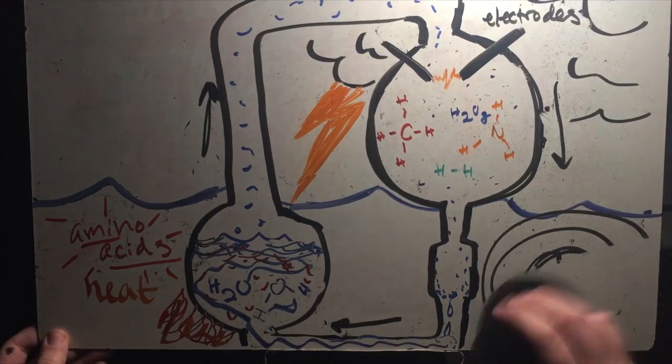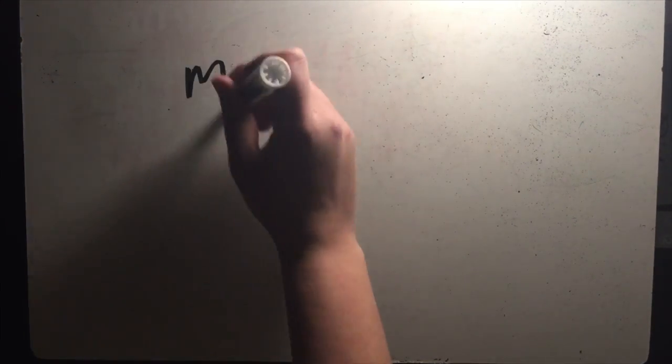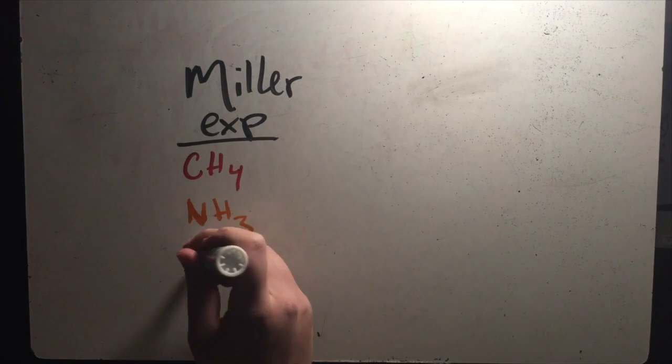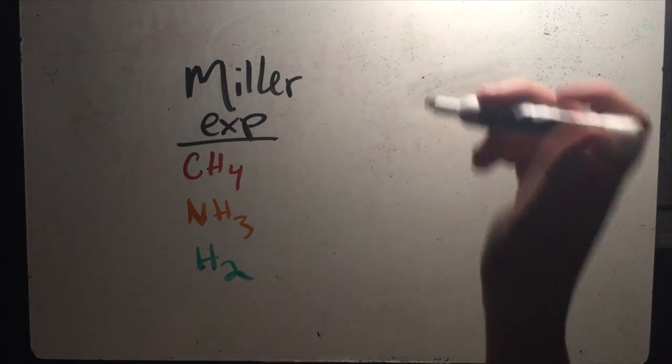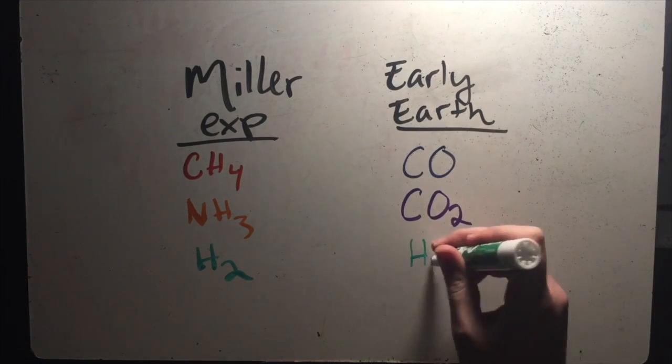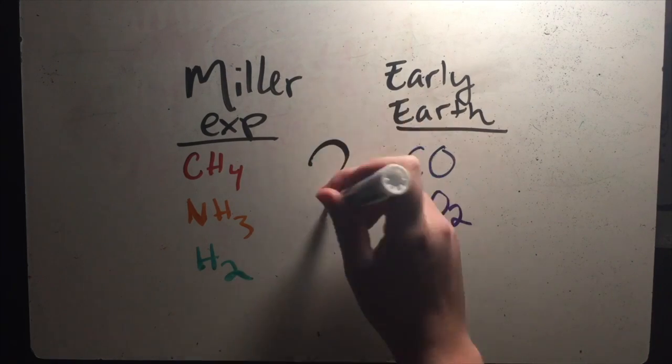Since the Miller experiment, much further study has been done on how life and the building blocks of it could have originated. This research has exposed a hole in the Miller experiment. The chemicals that were used in the Miller experiment for the atmosphere of primitive Earth are not all of the chemicals that have since been confirmed to have existed at the time. So if amino acids weren't produced exactly how they were in the Miller experiment, how did they originate?